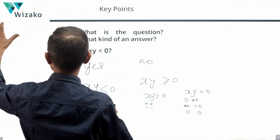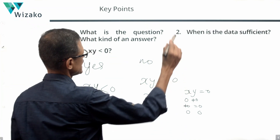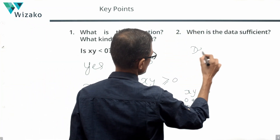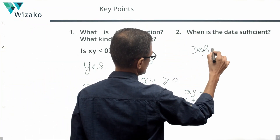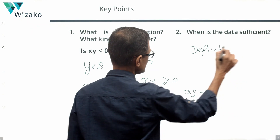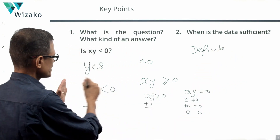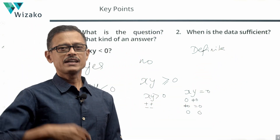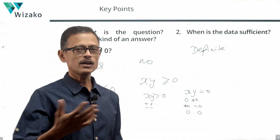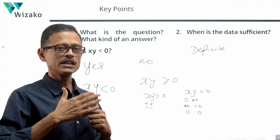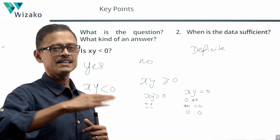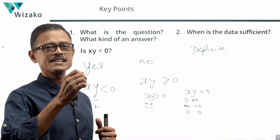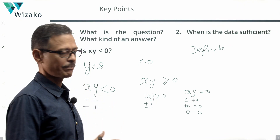When is the data sufficient for a yes-no question? The data is sufficient when we have a definite yes or a definite no. These are things you probably already know, but we are spelling it out to be absolutely clear that there is nothing we have missed in the process of analyzing the question stem.